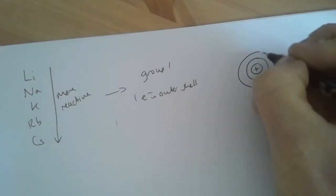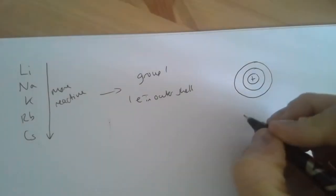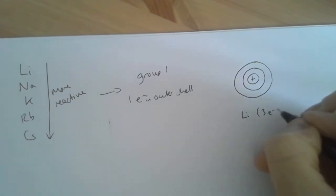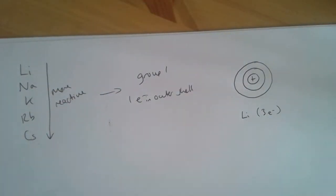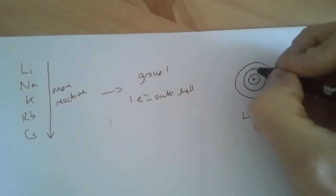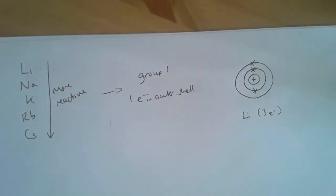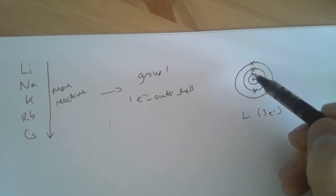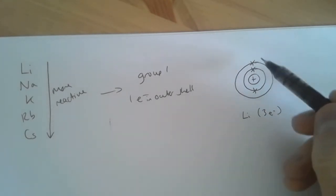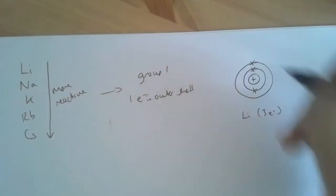I'm just drawing an electron shell diagram now for the element lithium. Lithium has three electrons, and we know that lithium, because it's in group 1, is going to have one electron in its outer shell. So I'm just going to put two electrons there on its first shell, and then the outer shell has got one electron in it.